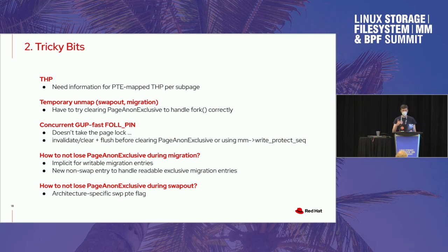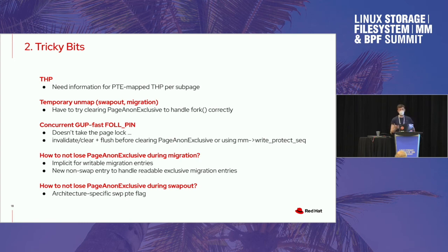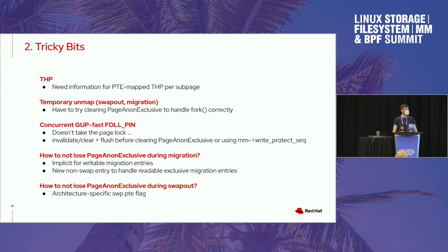When we do a temporary unmap like migration and insert a migration entry, we are required to clear the PageAnonExclusive bit, but we might want to preserve that information that the page was exclusive. We do that via the non-swap PTE — special migration entries we insert into the page table. For writable migration entries it's simple, because writable on an anonymous page implies exclusive. But when we have a read-only mapped page that was exclusive, we have to remember that in the migration entry. What I came up with is simply another migration entry called readable-exclusive — not the best name, but it gets the job done. So you have writable migration entries, readable migration entries, and readable-exclusive migration entries, which allows handling migration accordingly and preserving exclusivity information even when migrating a page.